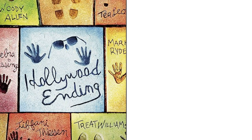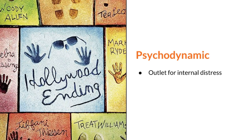The first specific cause is related to psychodynamic theories. This theory explains that the physical symptoms are an outlet for internal psychological distress. In other words, somatic symptom and related disorders are related to intrapsychic conflict and the use of defense mechanisms, or the failure to use them. The film Hollywood Ending is an example of a man who is forced to work with his ex-wife and develops blindness without any medical reason, otherwise known as conversion disorder.